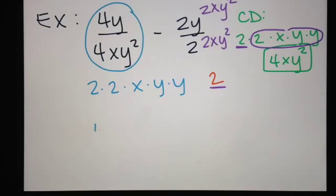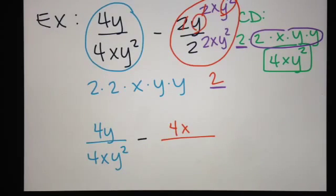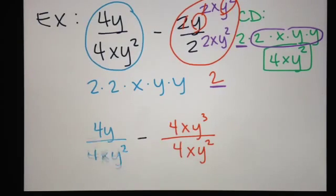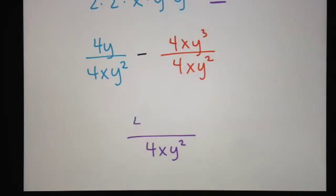My first fraction gets to stay the same. My second fraction: on the top, 2 times 2 is 4, then I have x, and then y squared multiplied by y is y to the third. On the bottom, 2 times 2 is 4, then x, then y squared. So now I'm ready to write this as one fraction with common denominator 4xy squared. On the top I have 4y minus 4xy to the third.